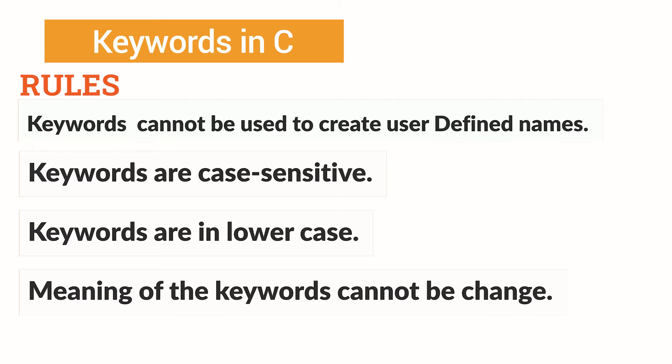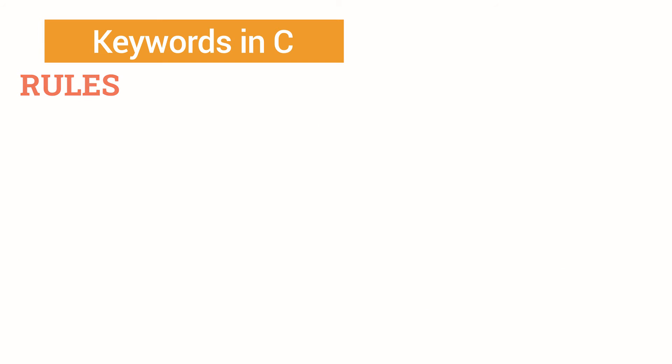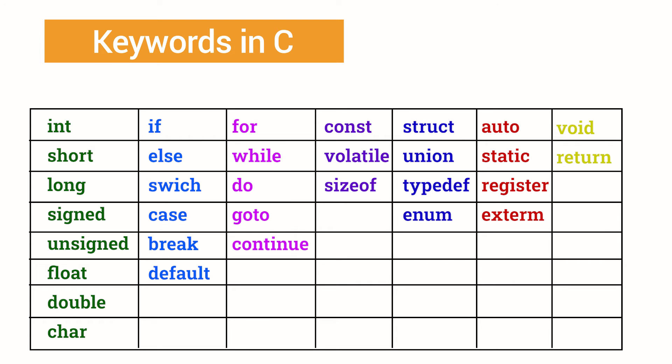The meaning of the keyword is already predefined, so the meaning of keywords cannot be changed by the user. These are all the rules to use keywords in C language. There are 32 keywords in C language.